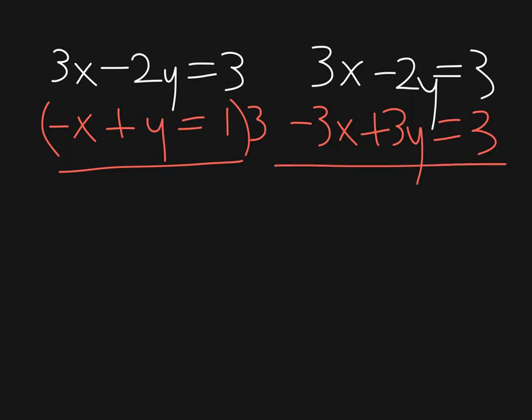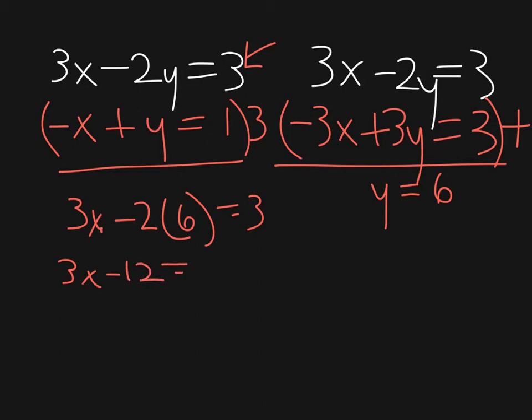I'm going to use addition this time. Add these two together because my 3 and my negative 3 cancel each other out. And what I'm just left with is y equals 6. Plug that into the first equation here. 3x minus 2 times 6 equals 3. 3x minus 12 equals 3. 3x equals 15. So x is going to be equal to 5. So that's going to be my point. My point is going to be 5 comma 6.